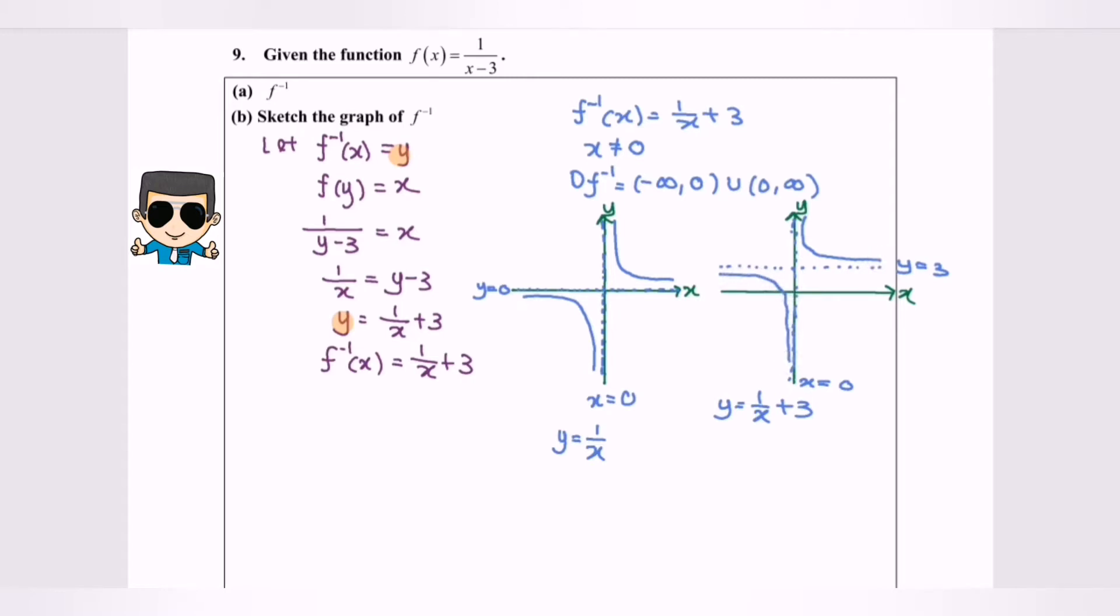Now we determine the x-intercept when y equals 0. When y equals 0, we have negative 3 equals 1 over x, so x equals negative 1 over 3. The coordinate will be negative 1 over 3, 0. So here will be negative 1 over 3.